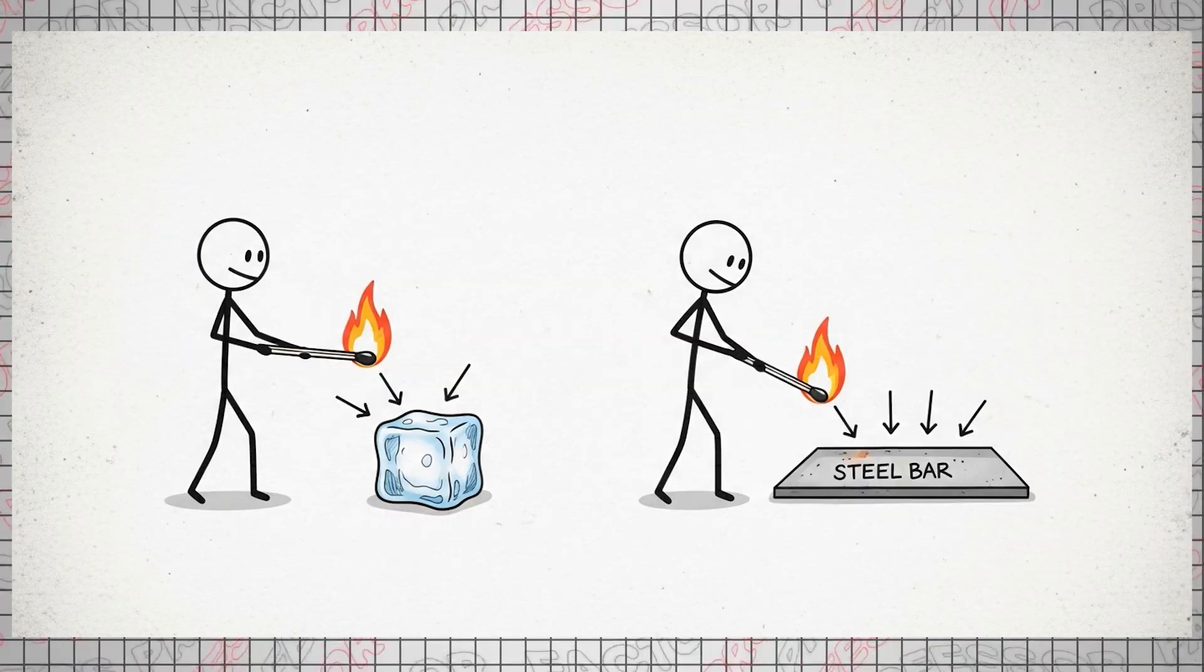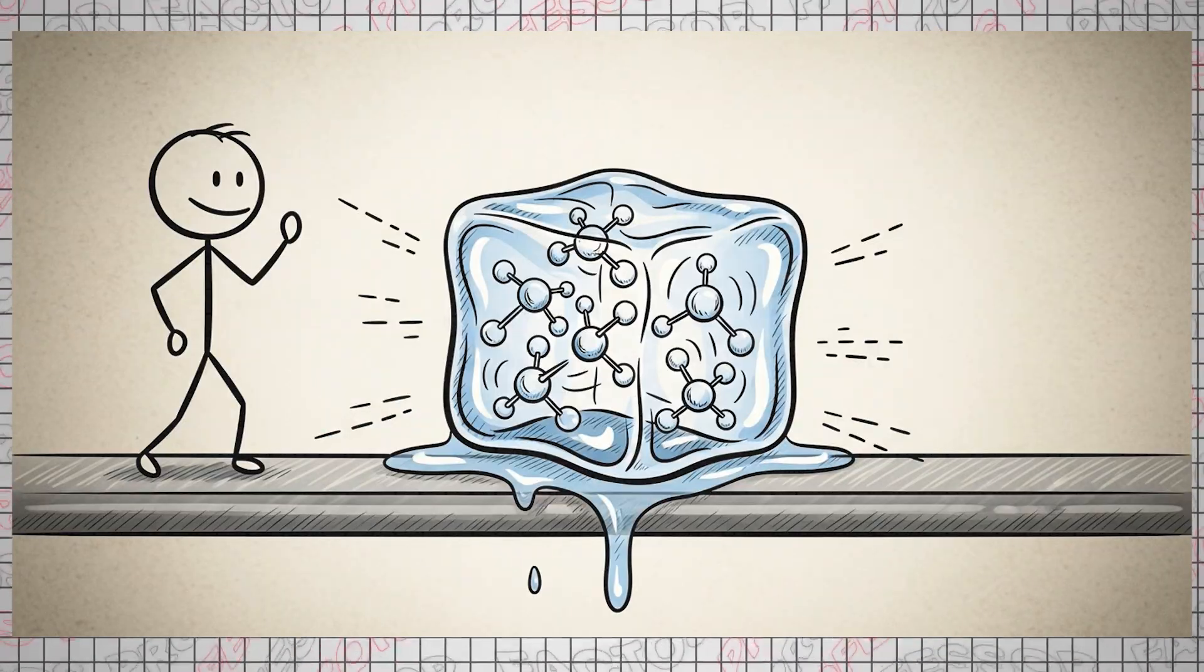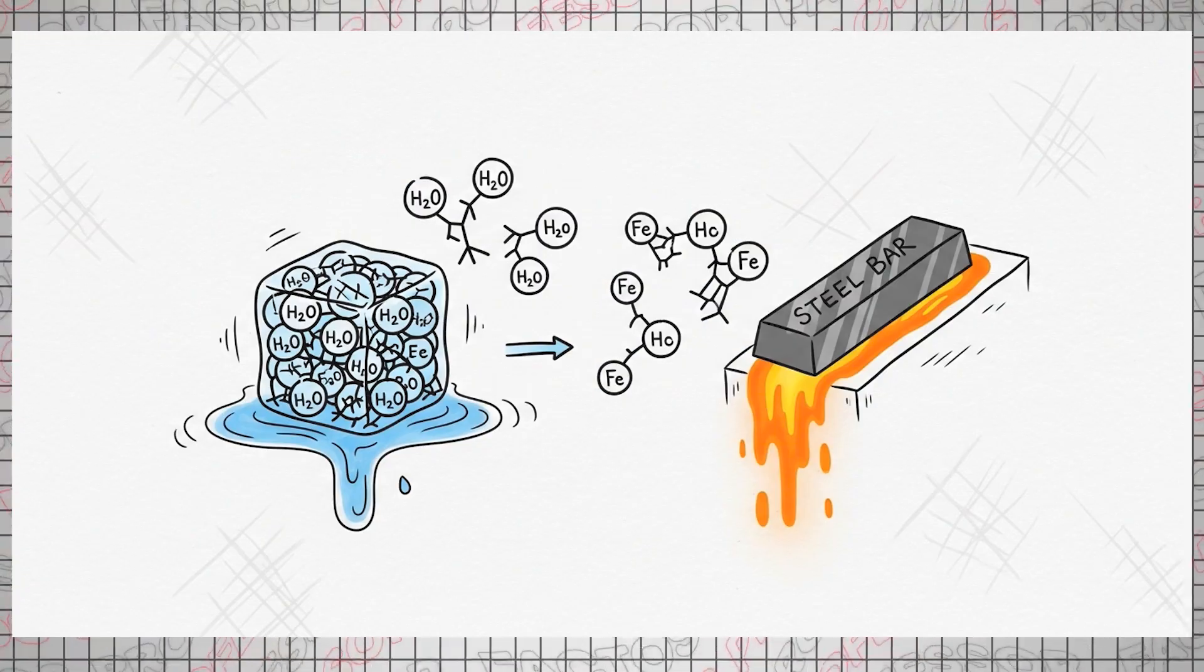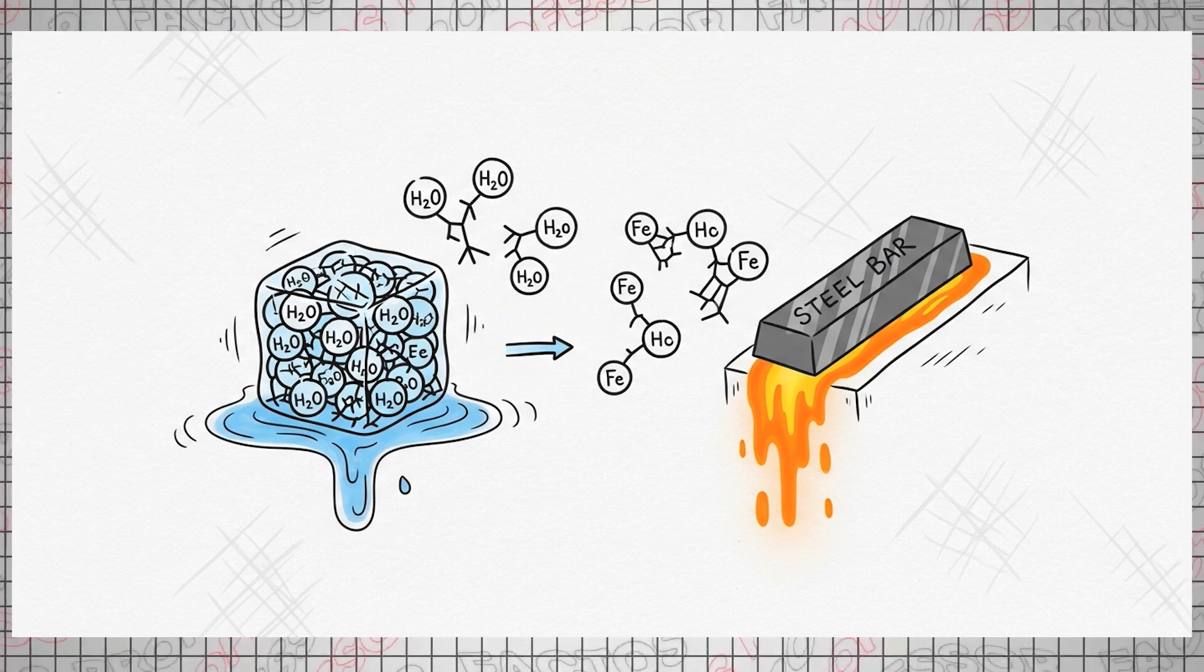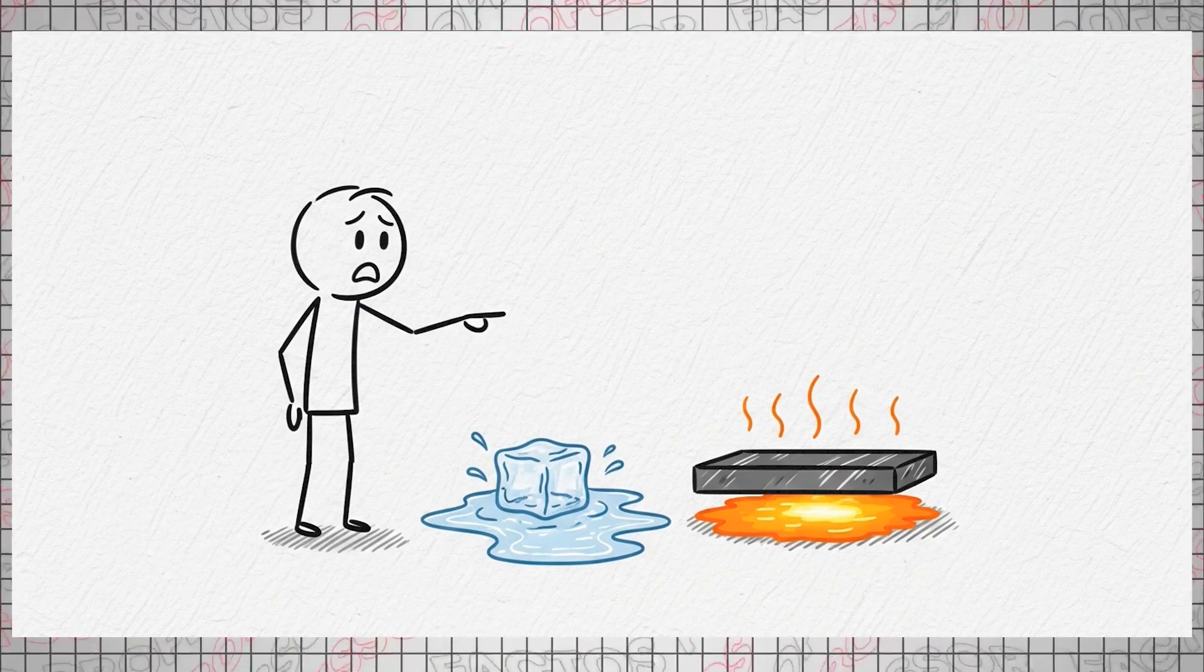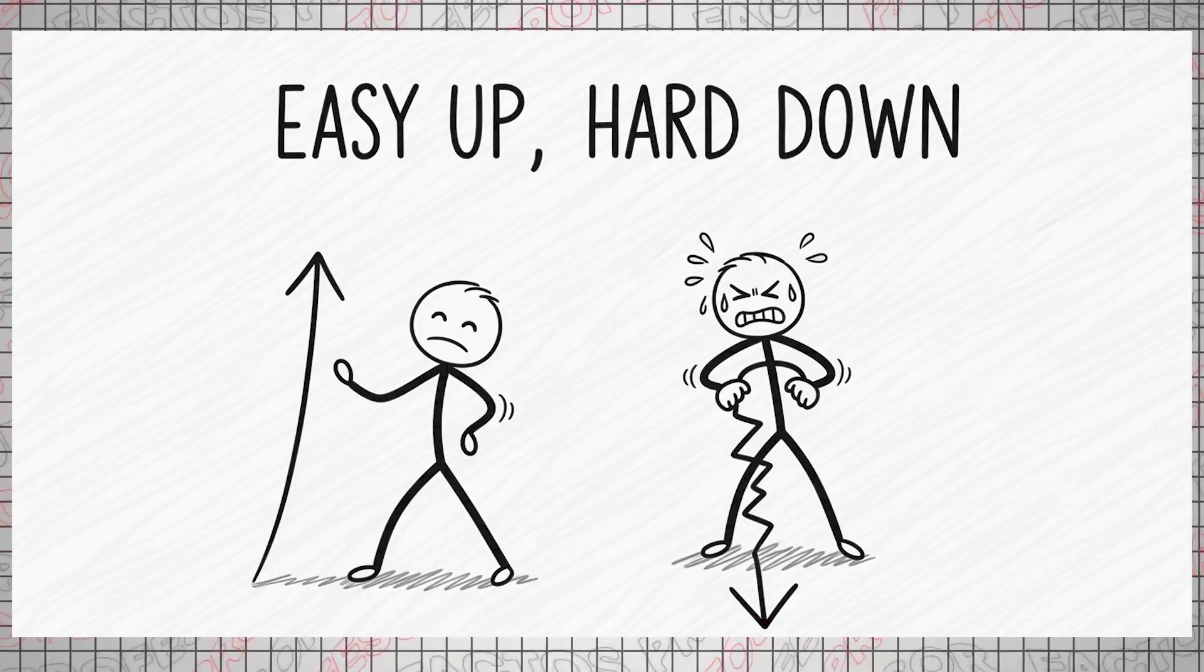When you heat an ice cube or a steel bar, the molecules absorb energy, causing them to vibrate increasingly fast. Eventually, they might even separate, literally entering a state of free floating. This is how ice melts or steel liquefies.